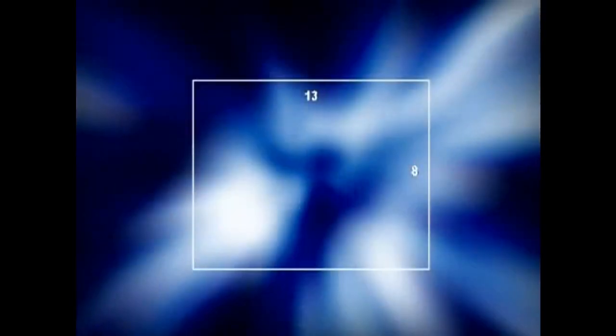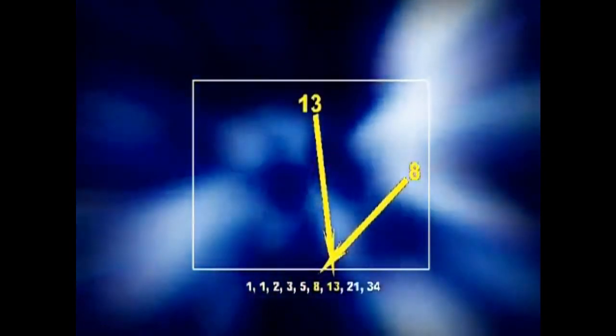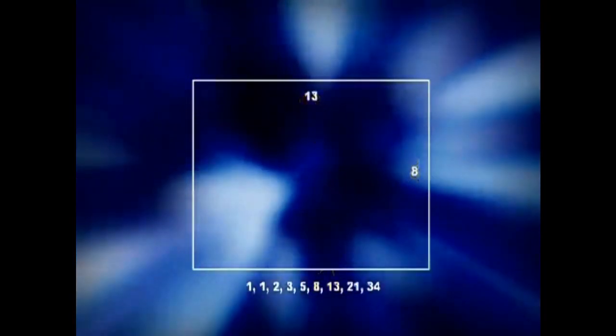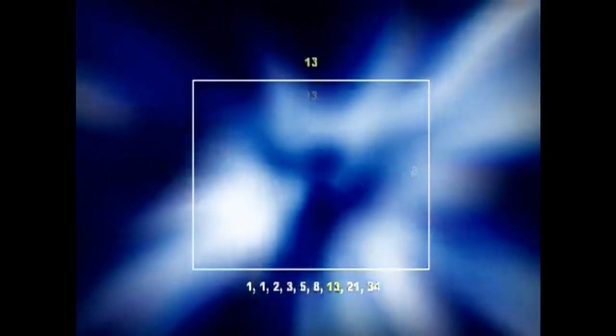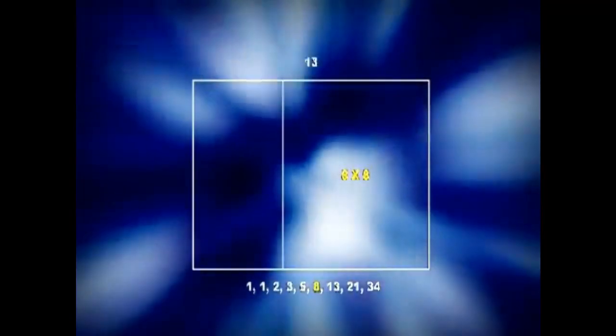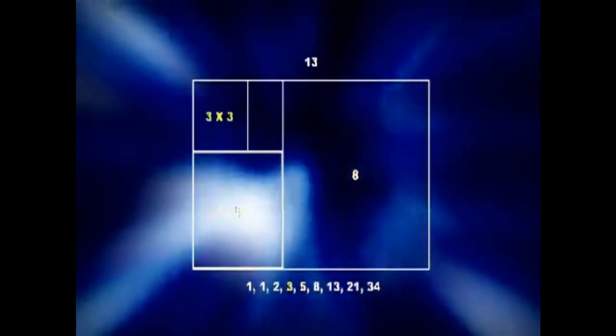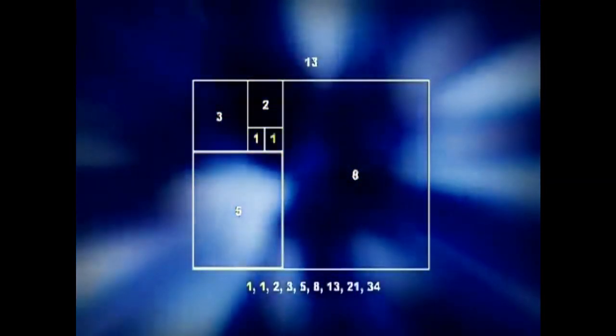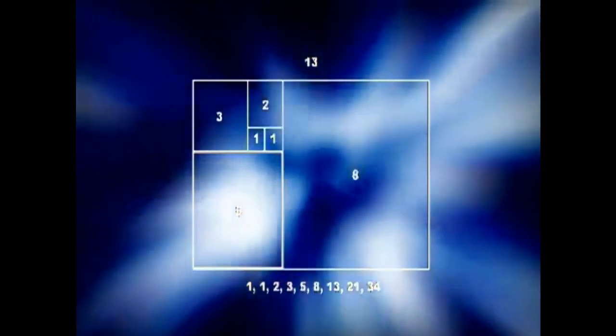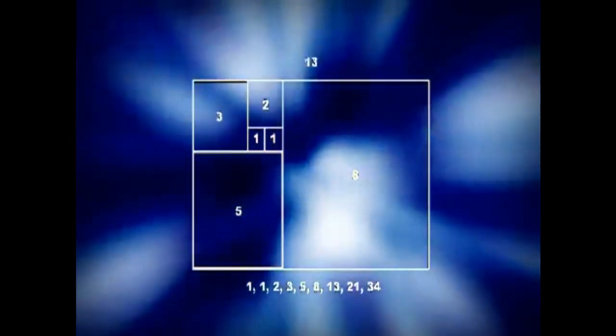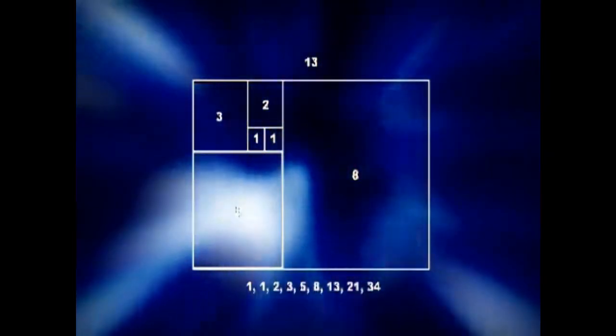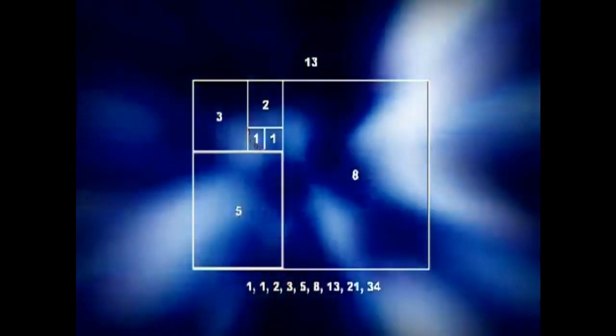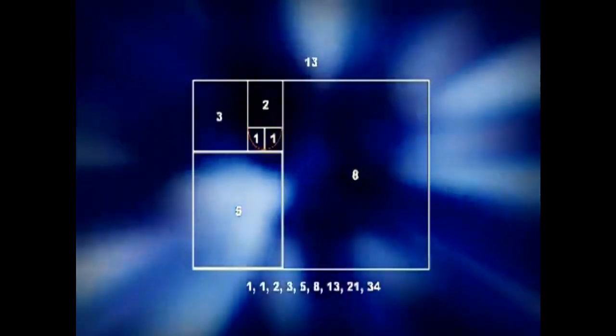A rectangle with a length and width of any two numbers of this sequence forms what is known as the golden rectangle, a perfect rectangle. A golden rectangle can be broken down into squares the size of the next Fibonacci numbers down and below. If we were to take a perfect or golden rectangle, break it down into smaller squares based on Fibonacci sequence and divide each with an arc, the patterns begin to take shape. We begin to see Fibonacci's spiral.